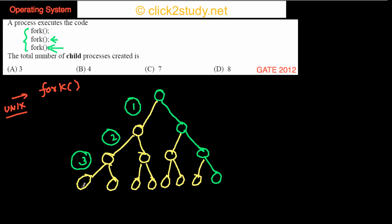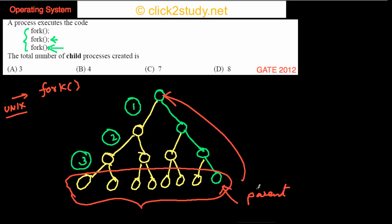So how many total processes do you have? If you look at these leaves, they will give you the total number of processes: 1, 2, 3, 4, 5, 6, 7, 8. But out of this 8, this one is the parent from the beginning. So that means all the remaining are the child processes, which is option 7.